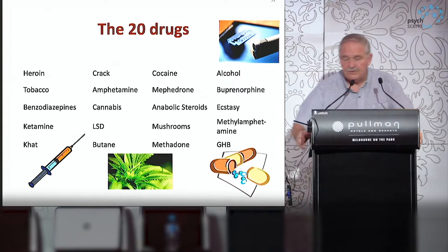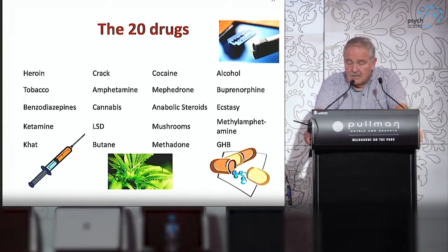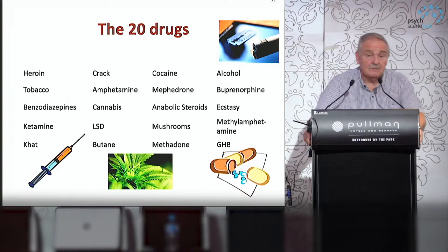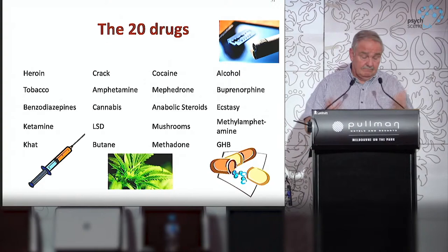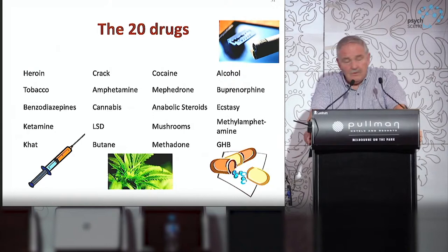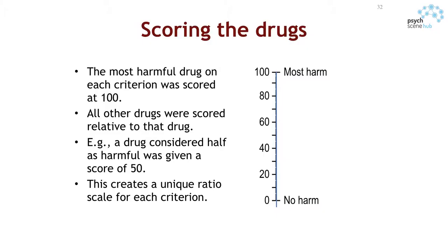We started off with 20 drugs — some legal, some illegal, some new, some old — and held a second conference. It's a complicated process: you get an expert group together and spend a day and a half to two days doing it. What you have to do is take all 20 drugs and rank them on each of those 16 parameters of harm.